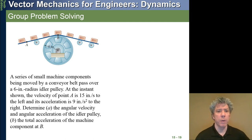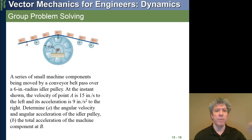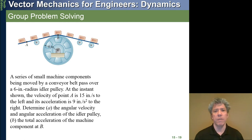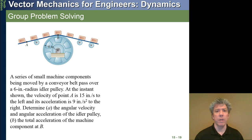A series of small machine components - those are the little boxes - being moved by a conveyor belt pass over a 6-inch radius idler pulley, with point B at the top. At the instant shown, the velocity of point A is 15 inches per second to the left - meaning moving down and to the left along the conveyor. Its acceleration is 9 inches per second squared to the right, so point A is moving but slowing down.